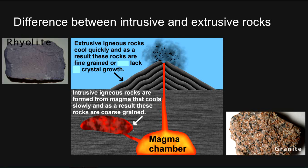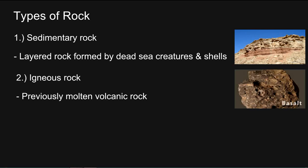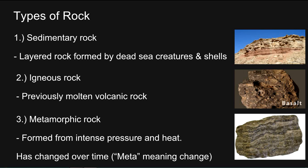The difference between intrusive and extrusive rocks. Extrusive igneous rocks cool quickly; as a result these rocks are fine grained or lack crystal growth — an example is rhyolite. Intrusive igneous rocks are formed from magma that cools slowly, and as a result these rocks are coarse grained, for example granite. Types of rock: sedimentary rock is layered rock formed by dead sea creatures and shells. Igneous rock is previously molten volcanic rock. Metamorphic rock is formed from intense pressure and heat, which has changed over time, with 'meta' meaning change.